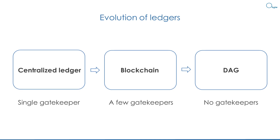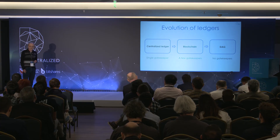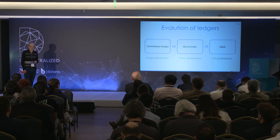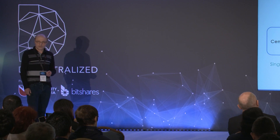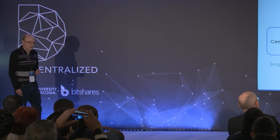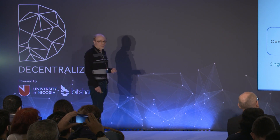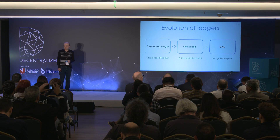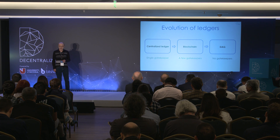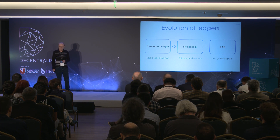You can think of DAG as the third stage in the evolution of ledgers. First, there were centralized ledgers, where there was only a single gatekeeper. Then came blockchains, where we have a few gatekeepers who accept transactions into the ledger. And finally, in DAG, there are no gatekeepers at all. Users just add their transactions directly to the ledger without asking anybody for permission.